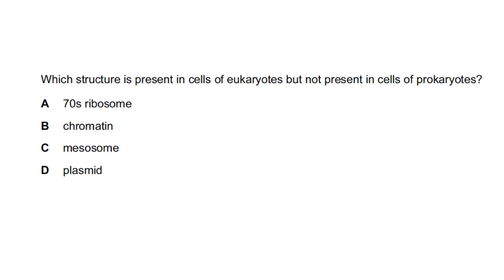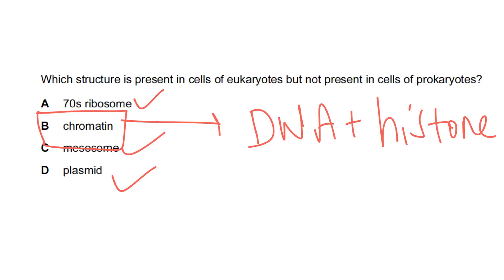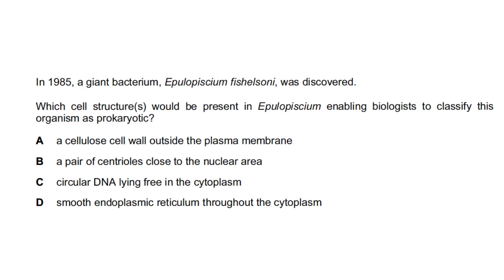Let's check out some past paper questions. Which structure is present in cells of eukaryotes but not present in cells of prokaryotes? Which structure is found only in eukaryotes? 70S ribosome is found in prokaryotes as well. Mesosome is found in prokaryotes. Plasmids found in prokaryotes. Chromatin, remember, is the DNA plus histone proteins. This is very important to know. There is no histone protein in prokaryotic DNA.